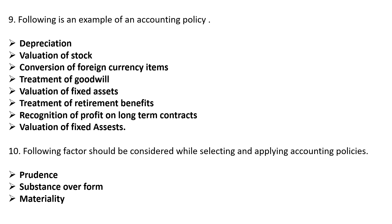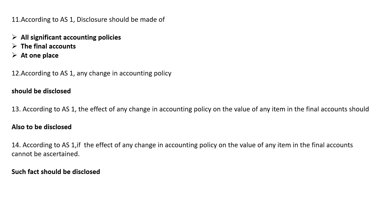So, prudence, substance over form, and materiality are the factors to be considered while selecting and applying accounting policy. According to Accounting Standard 1, disclosure should be made of all significant accounting policies in the final accounts at one place. Any change in accounting policy should also be disclosed, and the effect of any change in accounting policy on the value of an item in the final account should be disclosed. If the effect cannot be ascertained, that fact should also be disclosed.